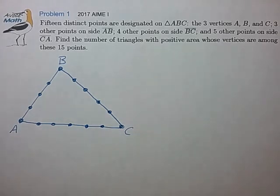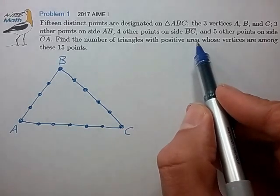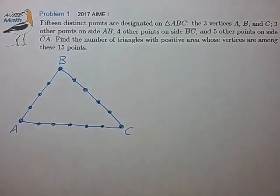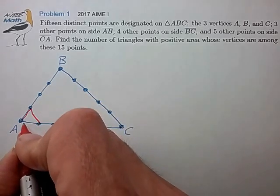And it looks like we're trying to form triangles of positive area with vertices selected among these 15 points. So, as usual, let me look at a couple of examples just to make sure I got this figured out.